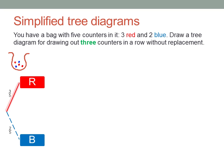Now the second counter. If the first one was red, then the second one could still be red or blue. But since we're not replacing the first counter, the chance of getting a second red one is now two out of four. There are only four counters left in the bag, and two of them are red. The other two are blue, so there's the chance of getting a blue counter on the second draw, if the first one was red.